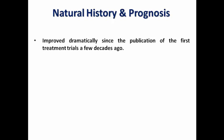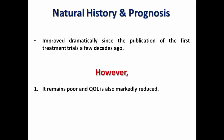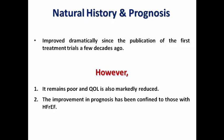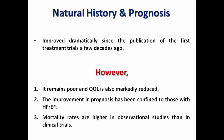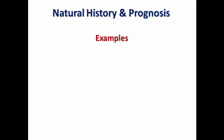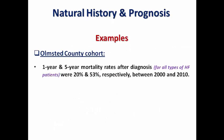The natural history and prognosis of heart failure has improved dramatically since the first treatment trials, but prognosis remains poor and quality of life is markedly reduced. The improvement has been confined mainly to heart failure with reduced ejection fraction, where prognostic improvement is linked to increases in ejection fraction. In the Olmsted County cohort, the 1-year and 5-year mortality rates after diagnosis were 20% and 53% respectively between 2000 and 2010.